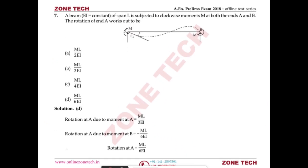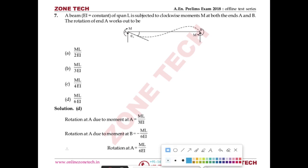Question number seven: a beam of constant EI and span L is subjected to a clockwise moment M at both ends A and B. Find the rotation of end A. For this, we first draw the bending moment diagram.